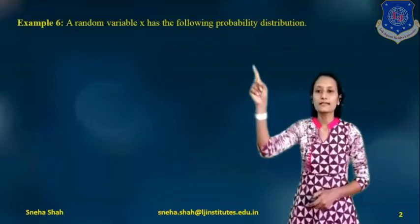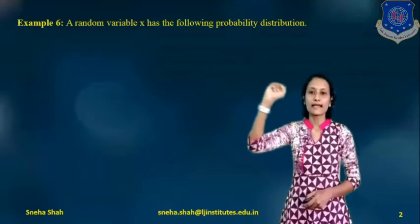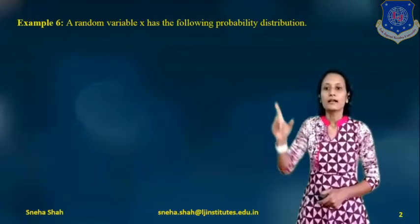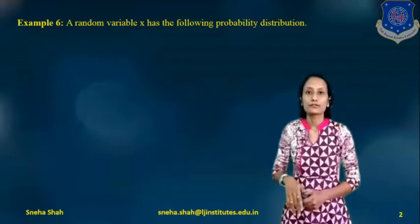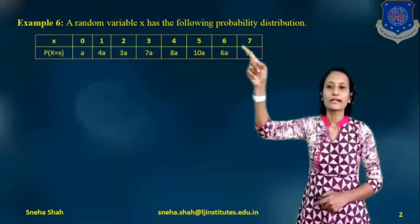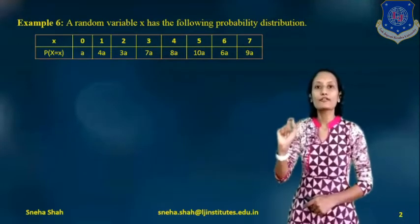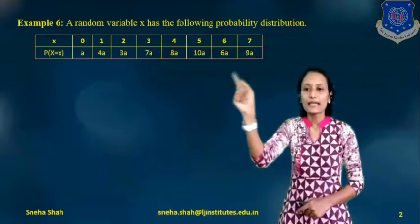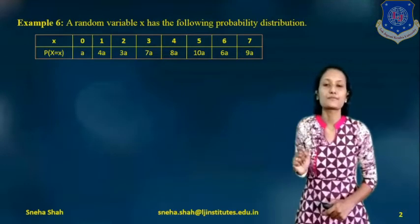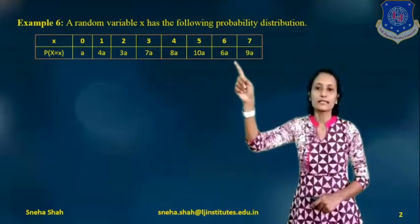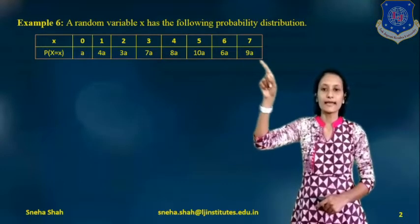In the last session I had explained 5 examples based on probability mass function. This next example: a random variable x has the following probability distribution. The values of x are 0, 1, 2, 3, 4, 5, 6, and 7. The corresponding probabilities P(x) are: a, 4a, 3a, 7a, 8a, 10a, 6a, and 9a.